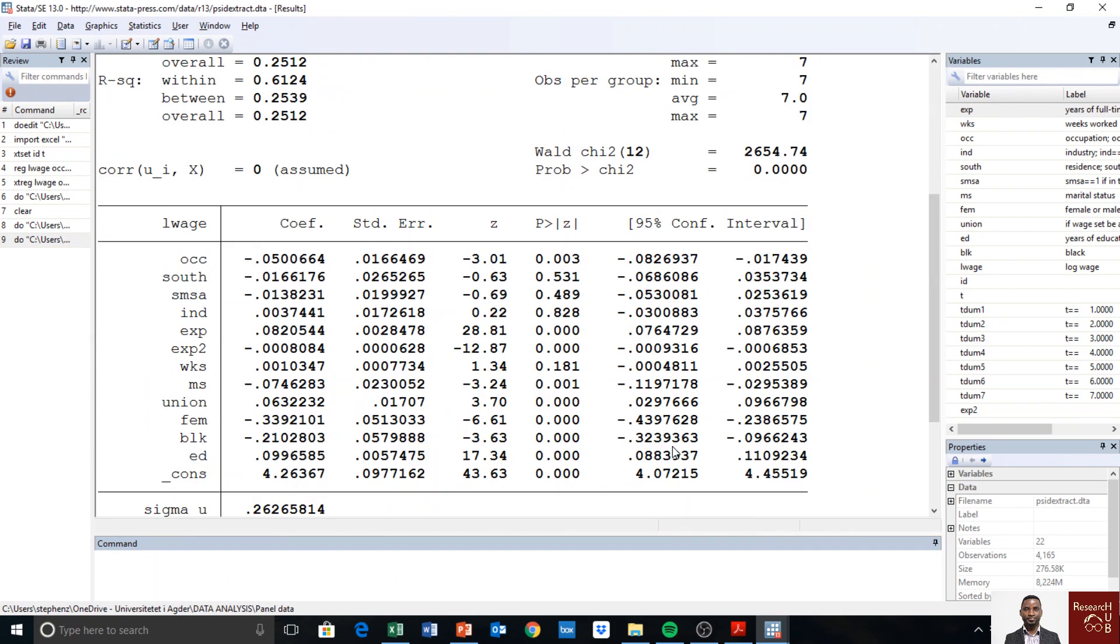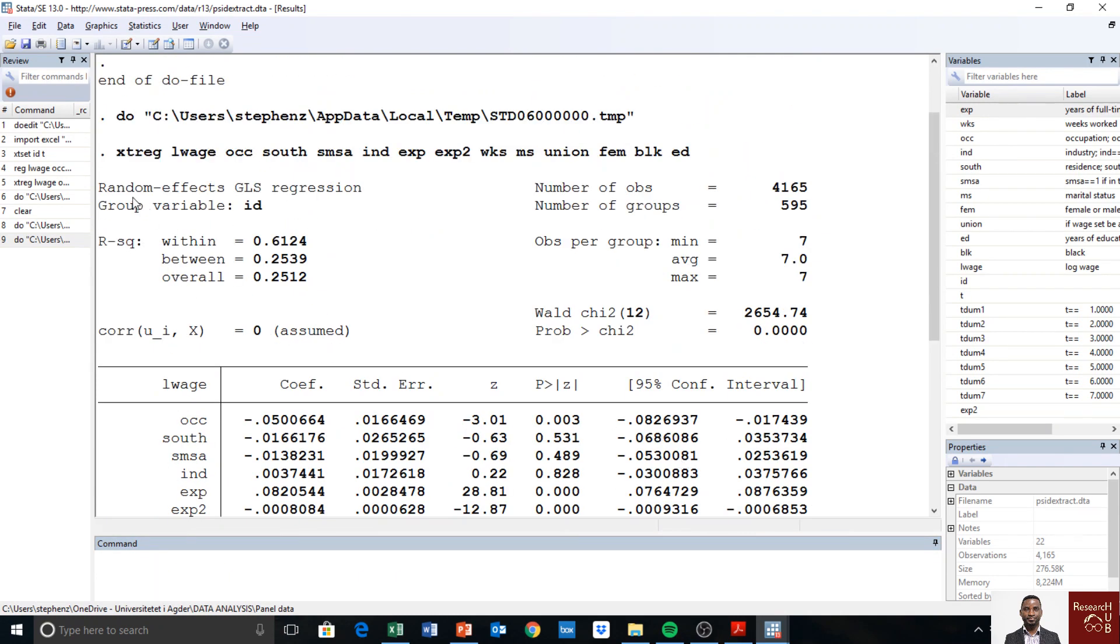Now I have the random effects model so it says here random effects GLS, generalized least squares regression, and we have the group name mean id, that is the unit, the name we use to depict the units. To the right we have the number of observations and number of groups. Number of groups simply mean the number of units, how many individuals for example are we observing: 595. And here we have the observation per group or per individual so the minimum is seven, the average is seven and the maximum is seven. That tells us the data is well balanced. Then we have the chi square here which is significant, the p value is less than 0.05 telling us that the model is correctly specified.